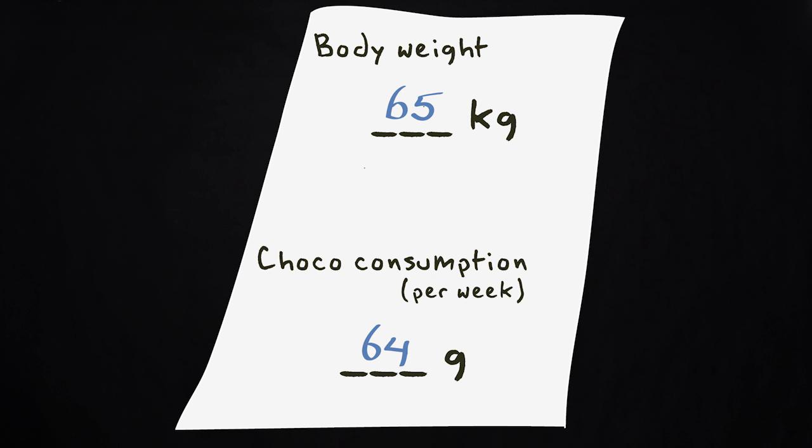Now I have much more precise information than before. And the best way to display the relationship between the quantitative variables chocolate consumption and weight is with a scatter plot.